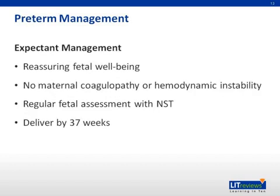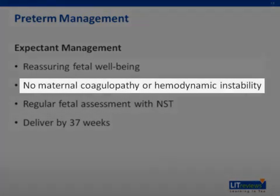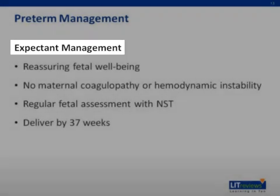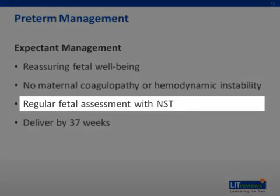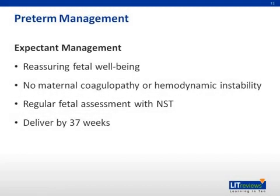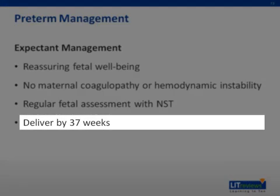In the preterm gestation complicated by placental abruption, the risks of prematurity must be balanced with the risks of reduced maternofetal oxygen and nutrient exchange. If there are no signs of fetal distress and the mother is hemodynamically stable without evidence of coagulopathy, then expectant management is the optimal course. Regular fetal assessment with non-stress testing and ultrasonography should be performed, and delivery pursued if fetal distress is uncovered. RhoGAM should be administered if the mother is RH negative. Maternal hemodynamic status and coagulation should be regularly monitored, and if abnormal, a move should be made toward delivery. If neither occurs and the pregnancy continues to progress, delivery should occur at or before 37 weeks, with exact timing ranging from 34 to 37 weeks.